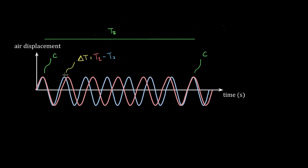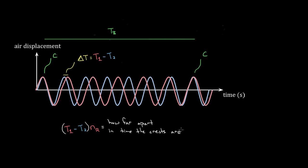This is how out of phase in time these two peaks are getting over time. If I waited one cycle, they'd be exactly that far apart in time. If I waited two cycles, two times that far apart. Three cycles, three times that far apart. So if we want to know how far apart the two crests are in time at any given moment, take this difference in period and multiply by the number of cycles the red wave has gone through.